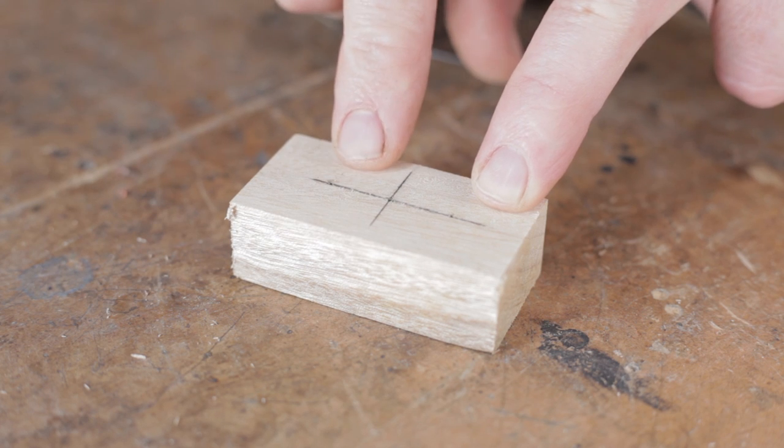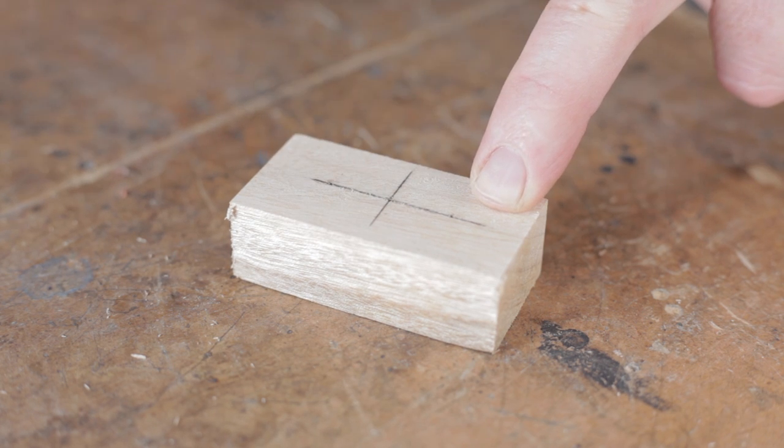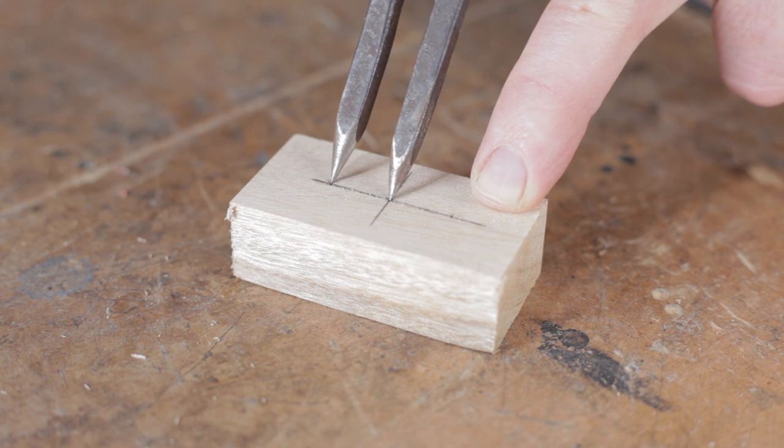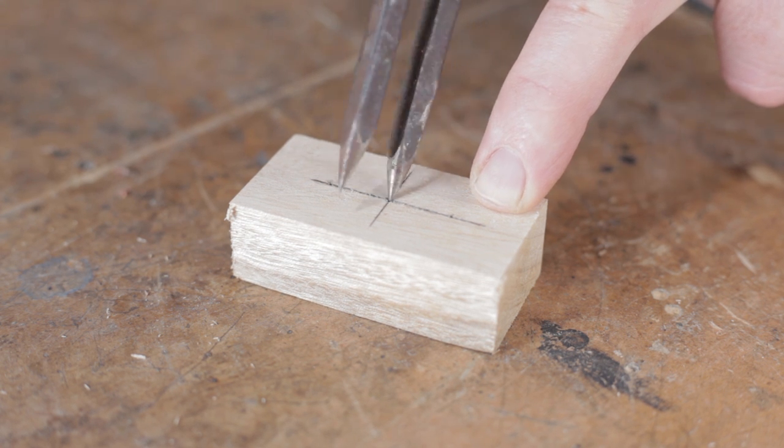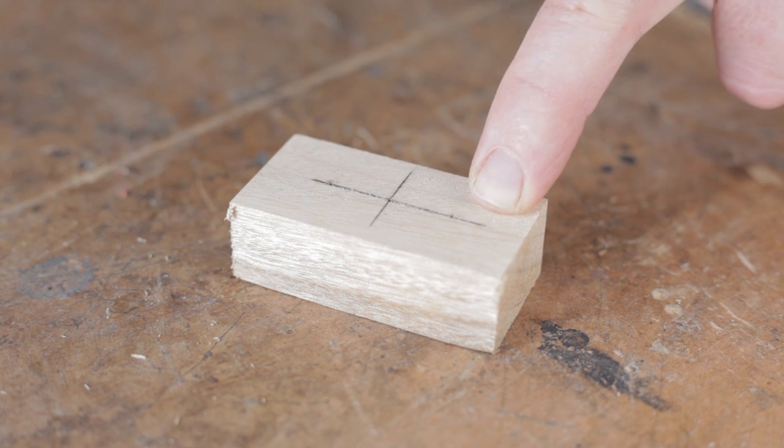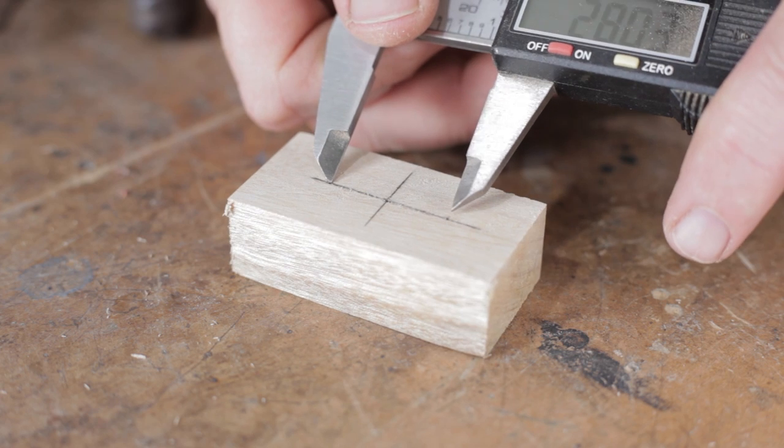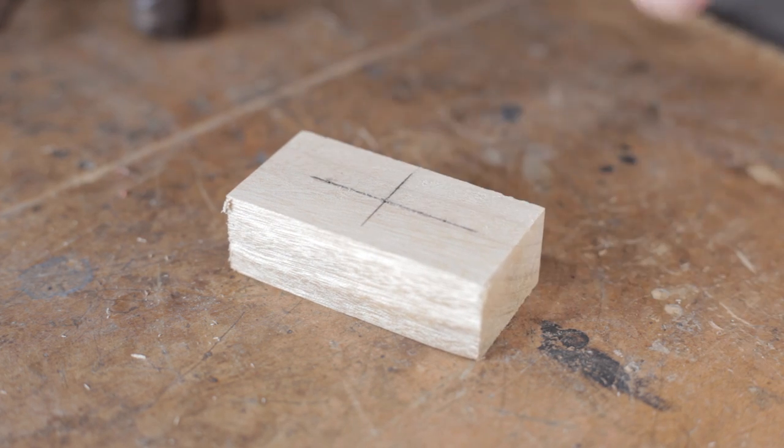I've just taken one of the blocks and I've found the center. And from that I set the dividers to 14 millimeters. So I've made a mark from the center that way and one that way. And just to double check that that's 28 millimeters, which is what we need, and it is.